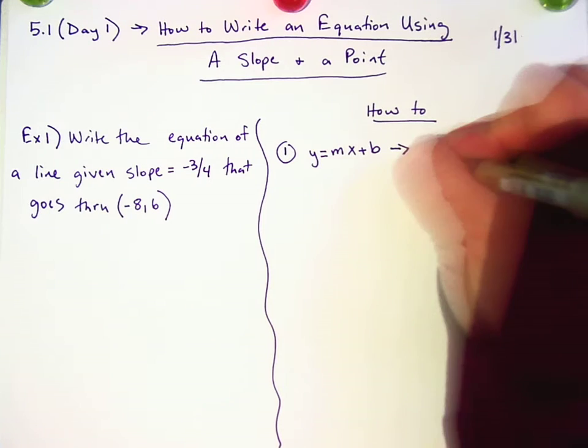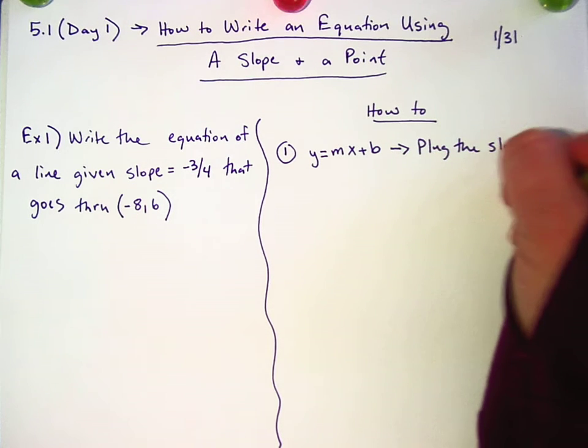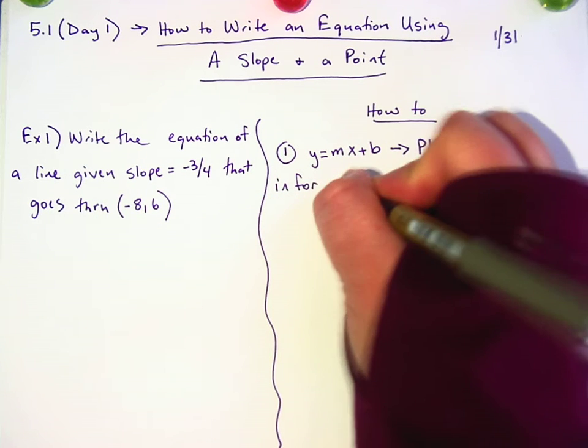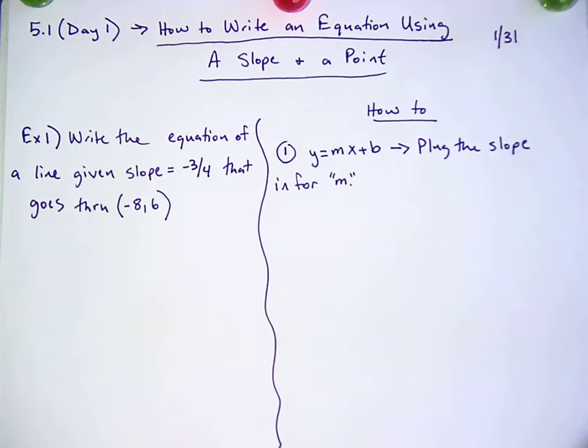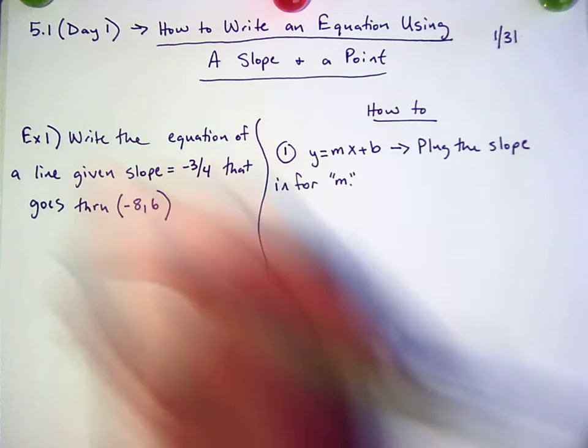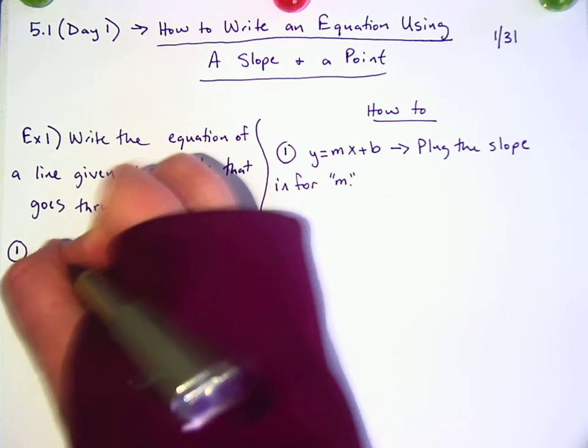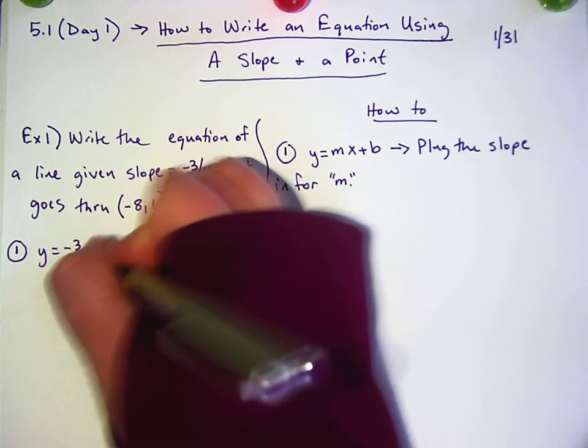All right. So the first step is to plug the slope in for m. And over here, I'm going to write number one, y equals negative three-fourths x plus b.